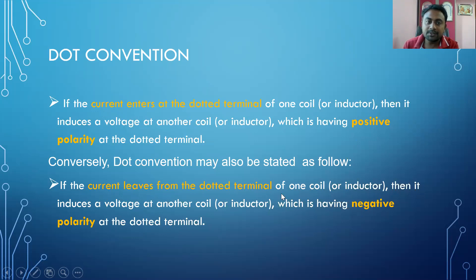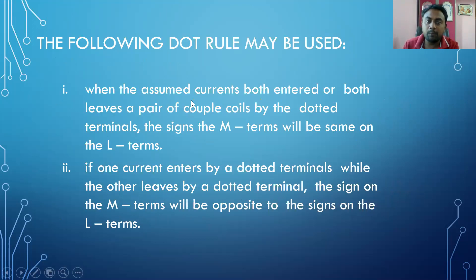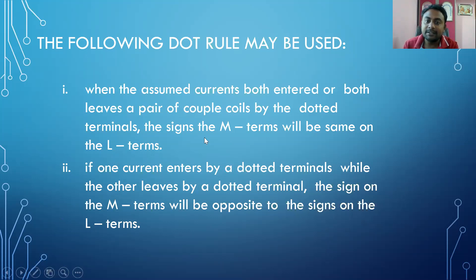In a simpler way: when the assumed currents in both coils of a coupled pair both enter or both leave by the dotted terminals, the sign of the M terms will be the same as the L terms. That is, if I write the L term as +L di/dt, then the mutual induced voltage is also +M di/dt. If I write −L di/dt, then the mutual term is also −M di/dt. This applies when both currents enter or both leave the dotted terminals.